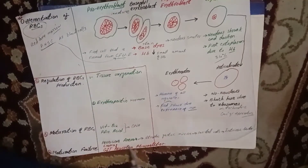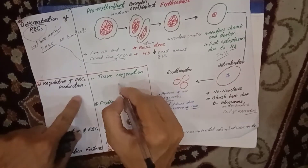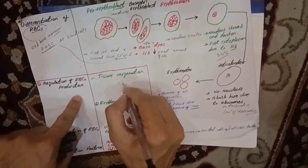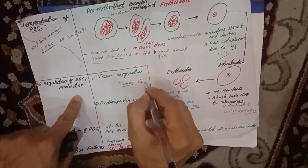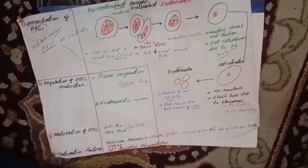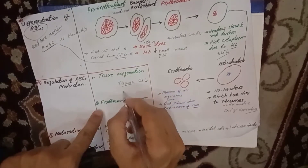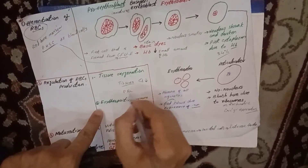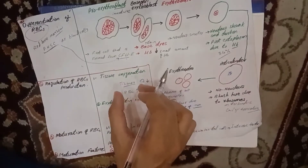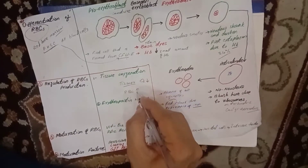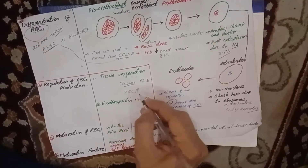Tissue oxygenation means that when our tissues receive low oxygen, they will enhance red blood cell production. When tissues have low oxygen supply, the body automatically increases red blood cell production.